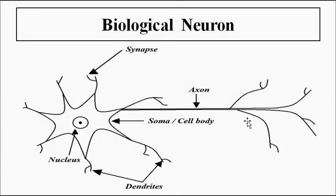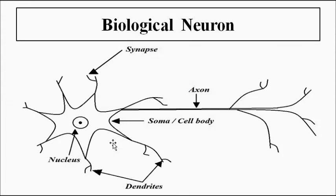A biological neuron looks something like a neuron cell. It has various structural parts. We should discuss these because we can then interrelate how the biological neuron relates to the artificial neuron, since all of these structural and functional units are present in the artificial neuron. The features of the artificial neuron are inspired by these functional units, so we should have a good basic understanding of each of them.